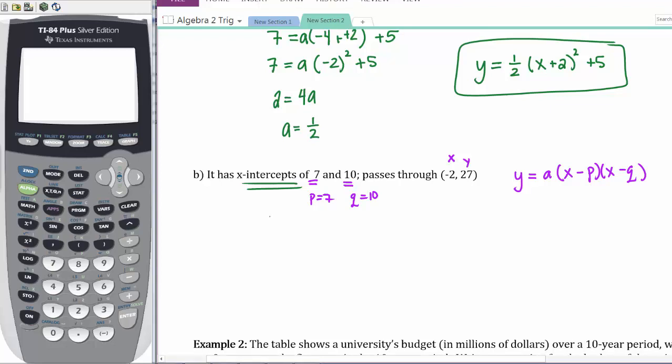I'm going to substitute that information. So I have 27 = a(-2 - 7)(-2 - 10). That gives me 27 = a(-9)(-12), which is 108a. Divide both sides by 108, and you get a = ¼.